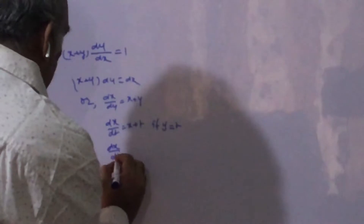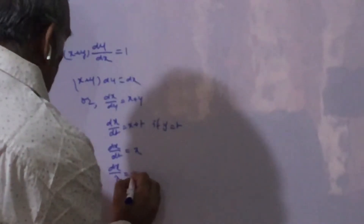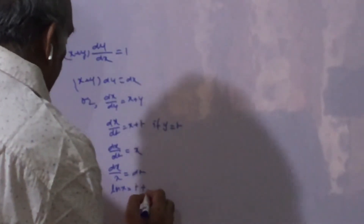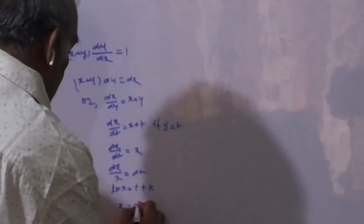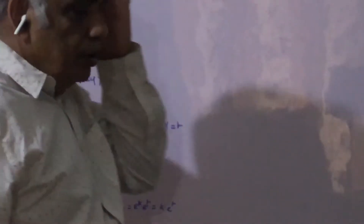Now we first find out the homogeneous solution. For finding the homogeneous solution, we write the homogeneous equation: dx/dt = x, or dx/x = dt, so log x = t + k (integration constant), giving x = K·e^t. This is the homogeneous solution of the given equation.